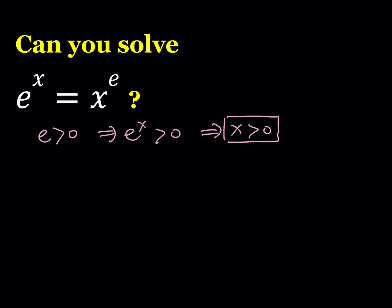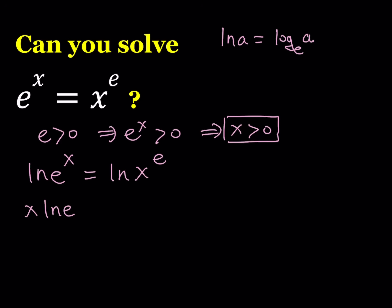Let's go ahead and ln both sides. Whenever you have e as a base, it makes sense to ln both sides. By definition, ln of a number a is the logarithm of a with base e. So let's go ahead and ln both sides: ln of e to the power x equals ln of x to the power e. This is a really good way to get rid of the exponents. Then we're going to move the powers: x ln e equals e ln x.